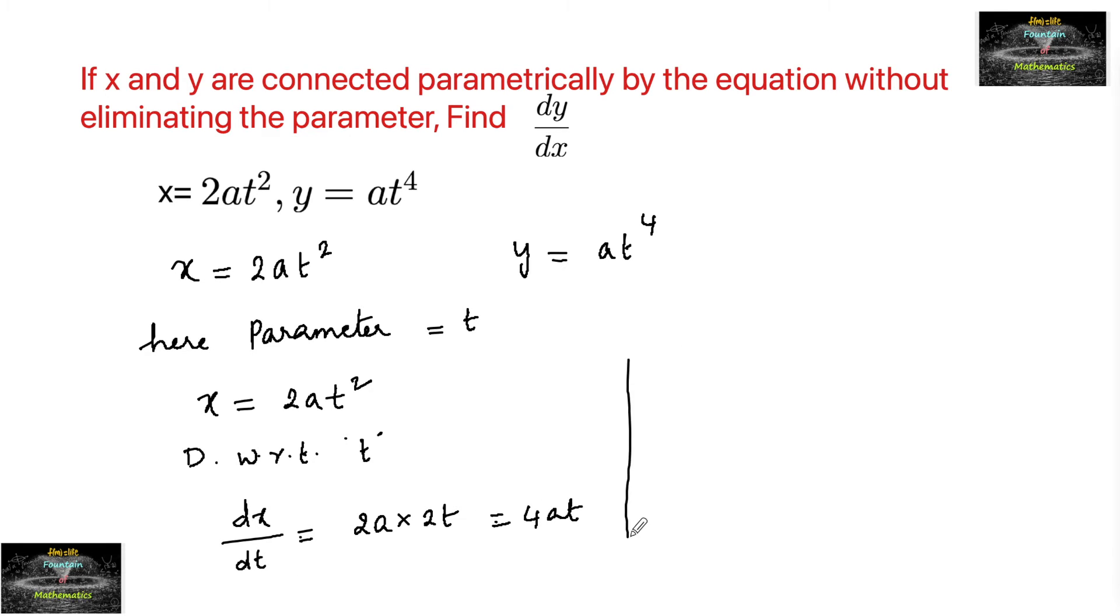Similarly for y = at⁴. Now again differentiating with respect to t. So we will have dy/dt = a into differentiation of t⁴, we can write 4 times t³, that is 4at³.